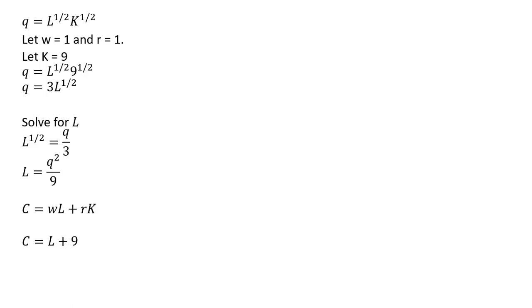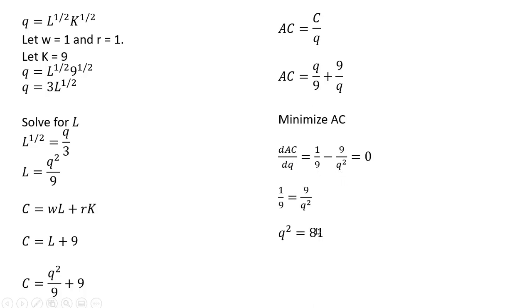W is 1, R is 1, K in this case is 9. And now plugging in L. Plugging in for L, which is Q squared divided by 9. Getting average cost. Minimizing average cost. Solving for Q. Average cost is minimized at 9 units of output.